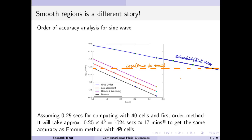You can imagine the extra computational time required to get the same accuracy as a second order method. Even if the second order method takes 5 seconds, 10 seconds, or 20 seconds, it is still much, much lower than 17 minutes.